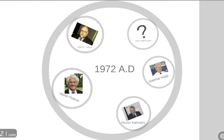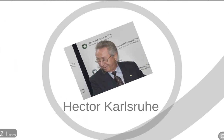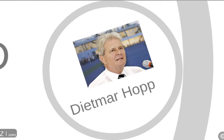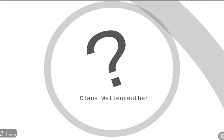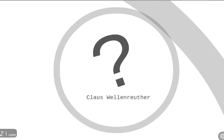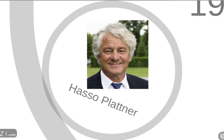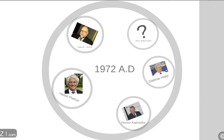In 1972, five Germans got together — they were former employees of IBM. Their names are: Hector Karlsruhe, Dietmar Hopp, Klaus Verenheuter, Klaus Chira, and Hasso Plattner.